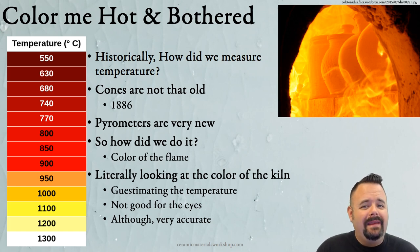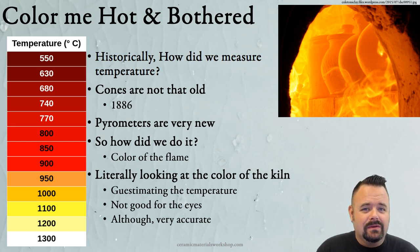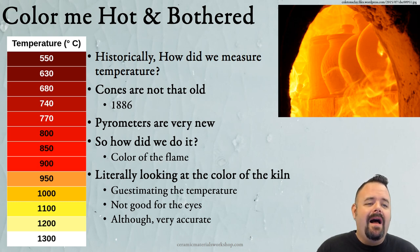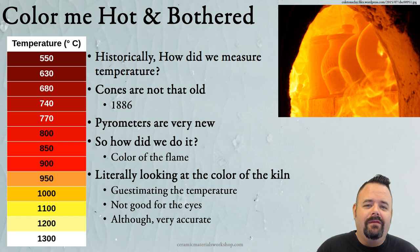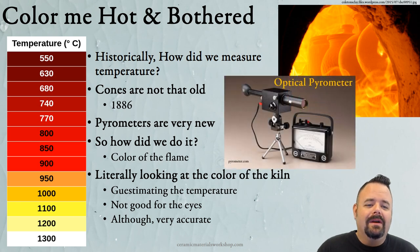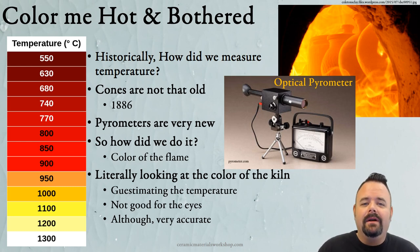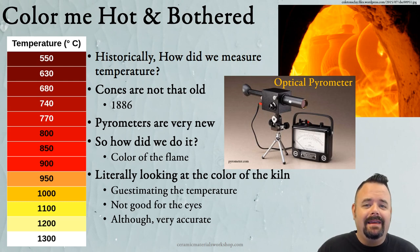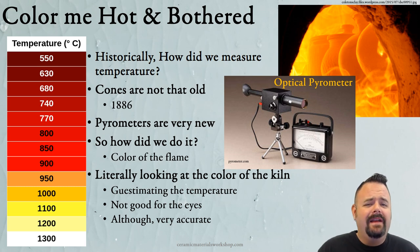But it wasn't good for the eyes, because looking into a kiln without any eye protection is exceptionally dangerous and could really blind you if you do it for enough years. The odd irony is that looking at flame color to reference temperature is actually very accurate. To this day, the most accurate way to measure temperature in a kiln is with an optical pyrometer, which looks at the wavelength of light given off by the kiln and creates a reference temperature. They're exceptionally accurate, just very expensive and very rare, so no one really uses them.